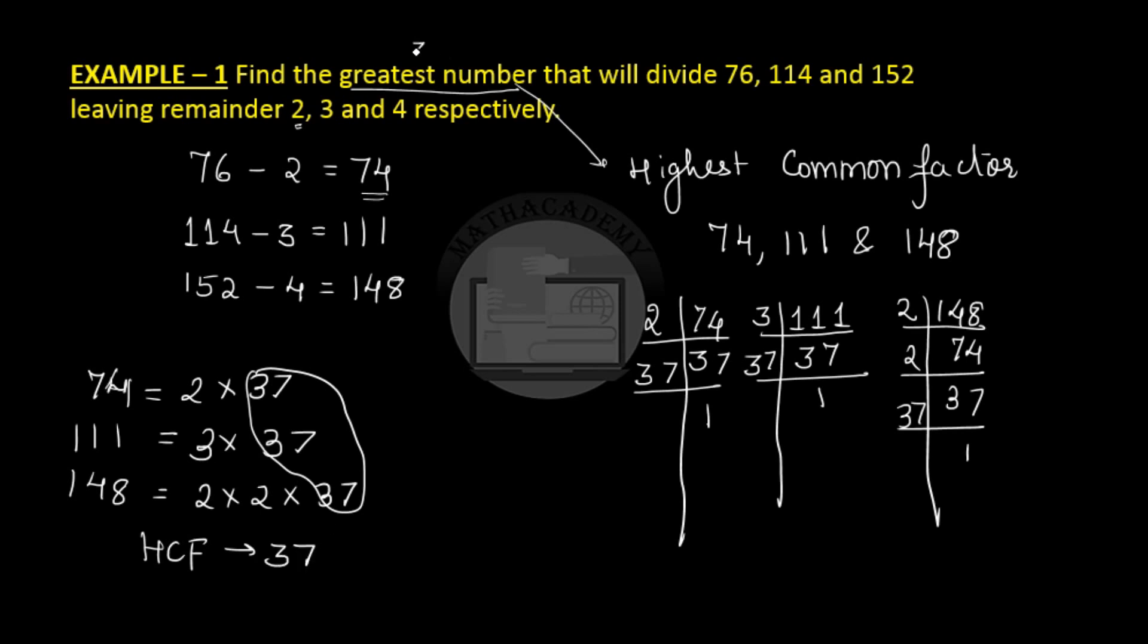So 37 is the greatest number which when divided 76, 114 and 152 will leave a remainder of 2, 3 and 4. So in this question you have to get the numbers which are exactly divisible by 37 and hence from the given numbers you have to subtract their remainders and get the three numbers and then find their HCF to get that greatest number. I hope this example is clear to everyone.